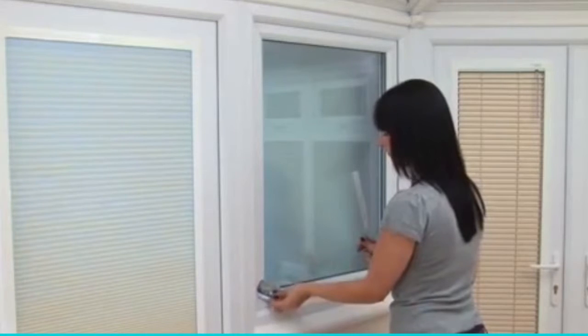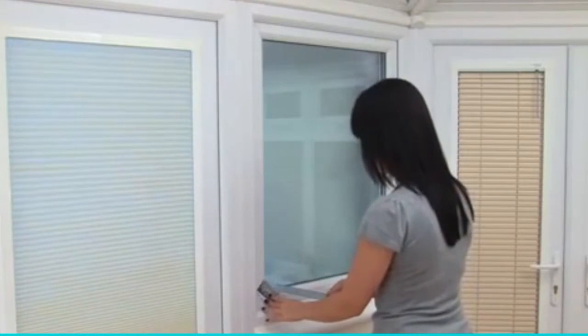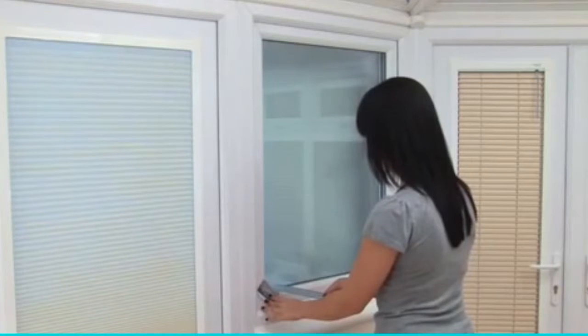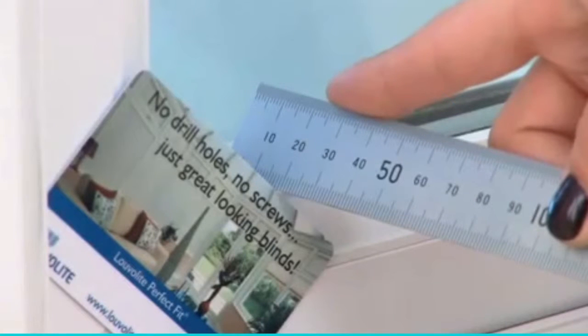Next, measure the depth of the window from the glass to the edge of the beading. This can be done by lining a metal ruler up against a credit card placed across the corner of the window frame. This measurement would normally be between twenty and twenty four millimeters and will determine the size of fixing bracket you will use.